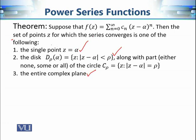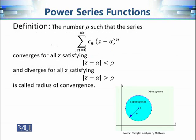These are the only three possibilities for the domain of this function. We also define the radius of convergence: the values of Z whose distance from alpha is less than rho form this disk, and this disk has radius rho. Then rho is called the radius of convergence of this power series function, because the power series converges inside this disk and diverges outside it.